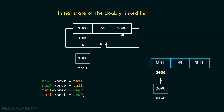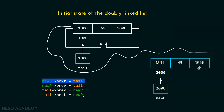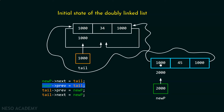This is the prev part of the node and this is the next part of the node. These four lines of code are required in order to add this node at the beginning. First, new p next equal to tail means we should update the next part of this node so that it can point to this node — that is, we will store address 1000 here. After this, new p prev equal to tail means we will update the prev part of this node so that it can point to this node; again, we store address 1000.